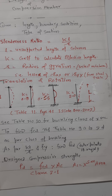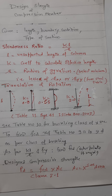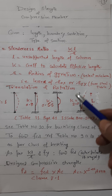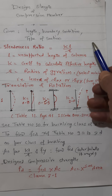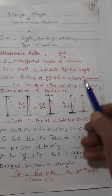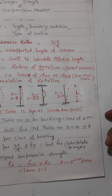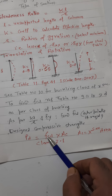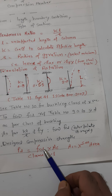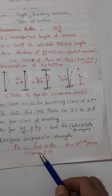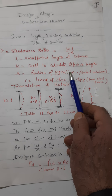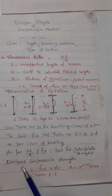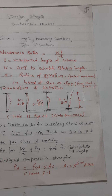For example, if kL/r is between 90 and 100, say 94, pick up the F_cd value for 90 and for 100 for the given F_y, then interpolate for 94. F_cd is given in N/mm². This stress multiplied by the area of cross-section gives the design compressive strength in Newtons; dividing by 1000 gives the result in kilonewtons.